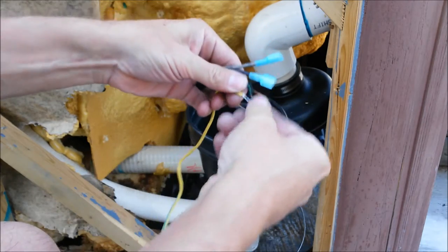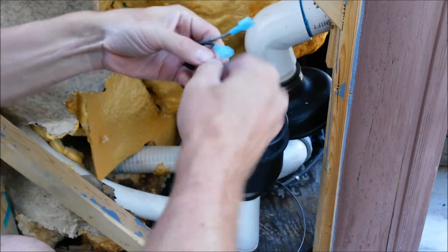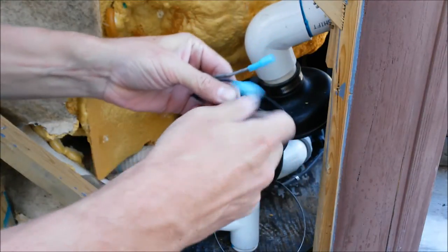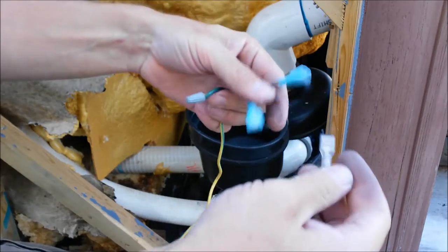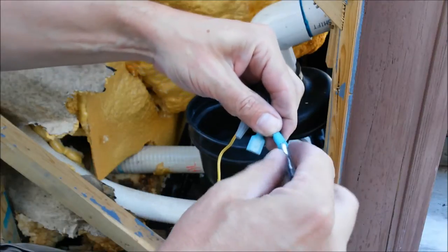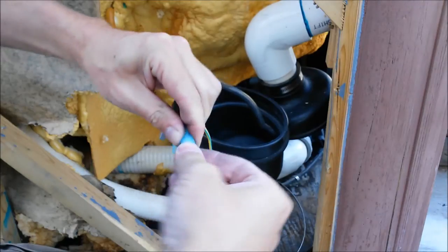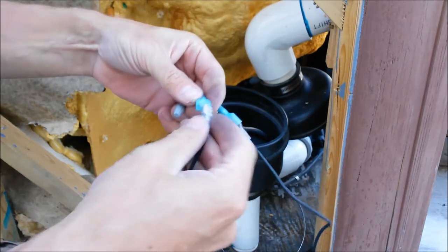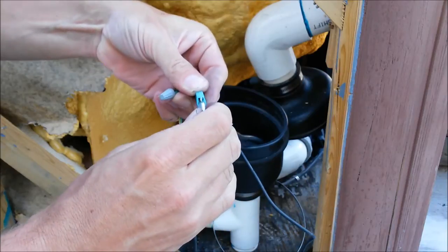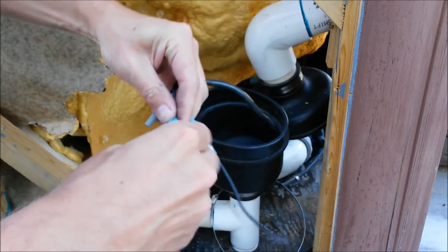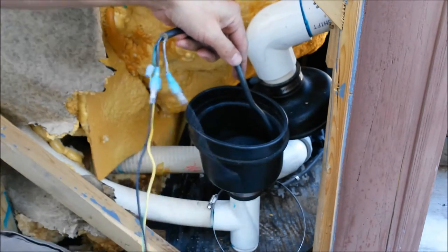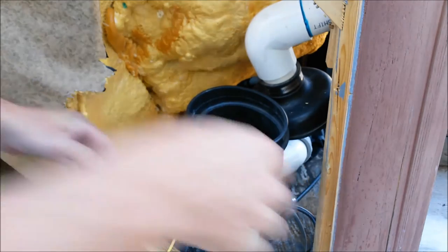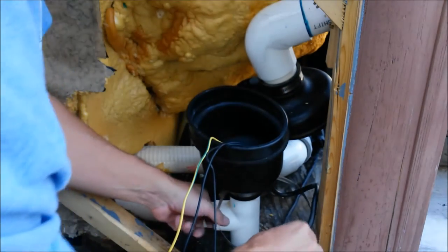There we go, I'll go ahead and wire nut the ground first. And then the polarity isn't going to matter on these. Just hook one to one and one to the other. Alright, so we're going to go ahead and pull our wire all the way back down to just above where the insulation stops. And then we'll go ahead and tighten down our hose clamp that holds that wire in.